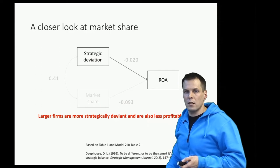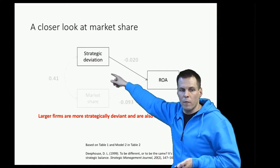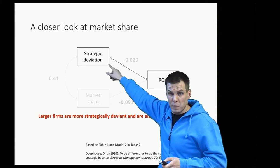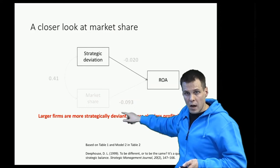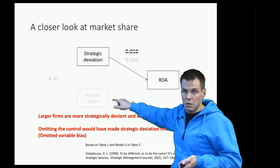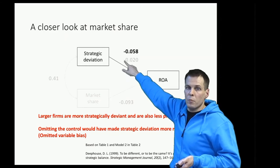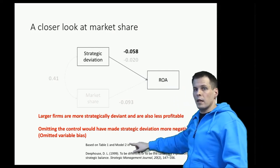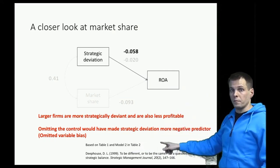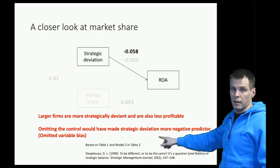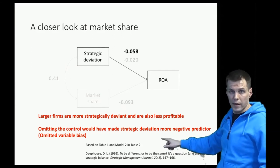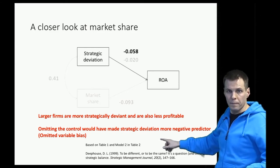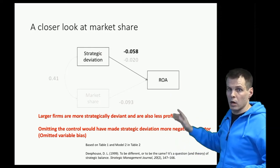Let's assume we leave market share out. Then our estimate of strategic deviation would capture both the actual direct effect of strategic deviation and also the effect of size, because size is correlated with deviation. So the effect would be 0.02 minus 0.058 — roughly three times as large as before. Omitting the important control variable would have a serious consequence for the modeling results, resulting in omitted variable bias, which makes the estimate three times as large as it otherwise would be, assuming the model is otherwise correctly specified.